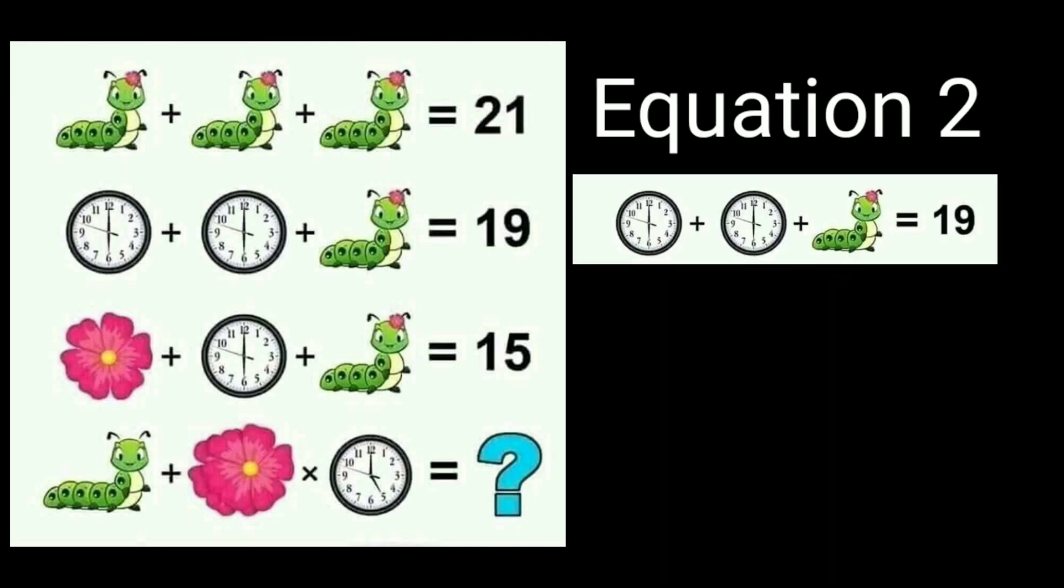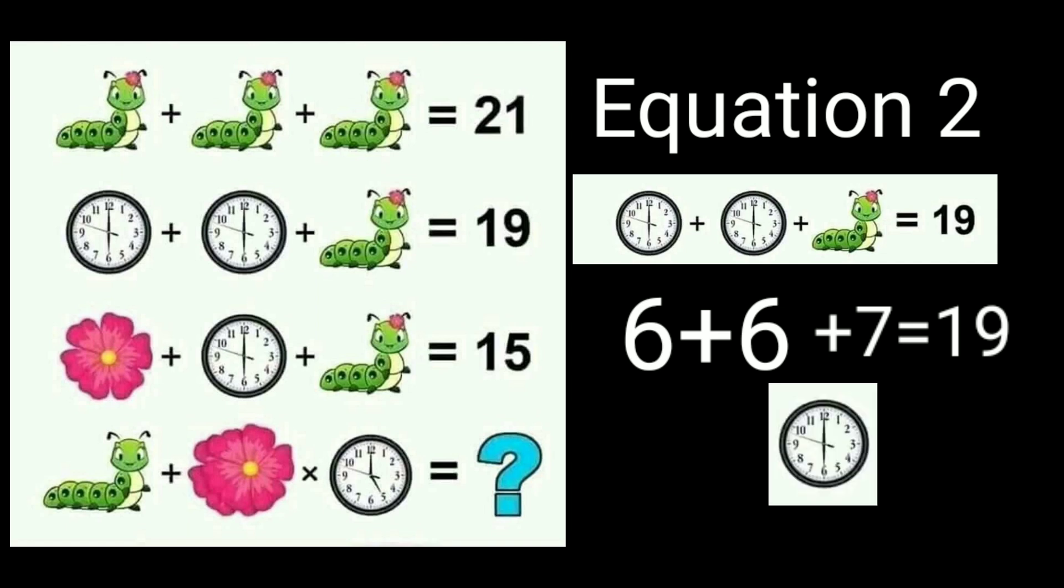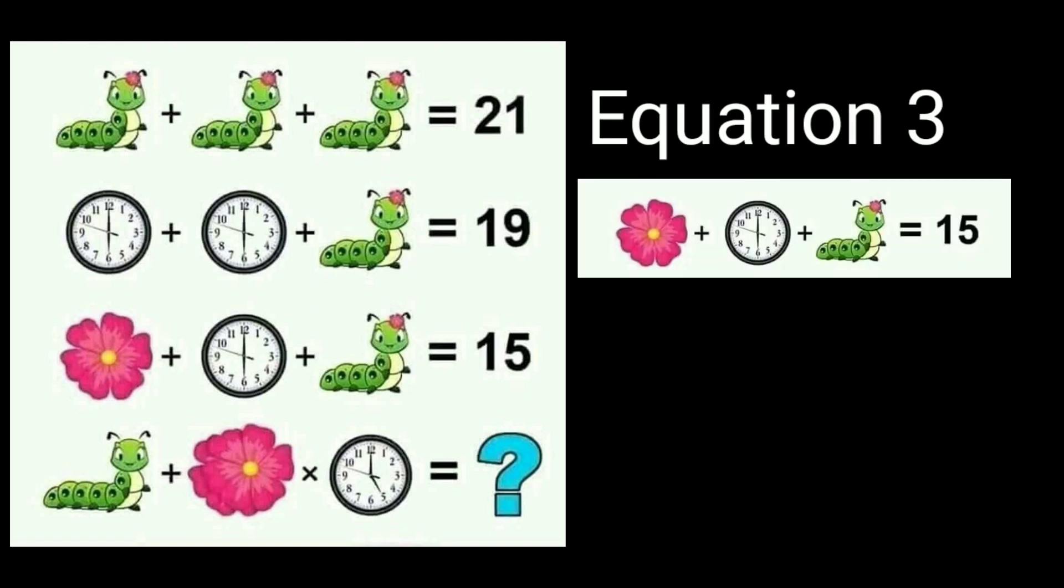Now, look at equation 2. One caterpillar is there and 2 clocks. The value of caterpillar from equation 1 is equal to 7, so the value of the clock definitely is equal to 6. So 6 plus 6 plus 7 equals 19. The value of clock is 6.